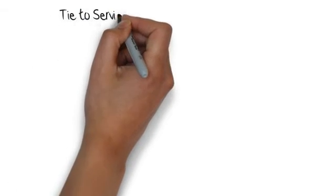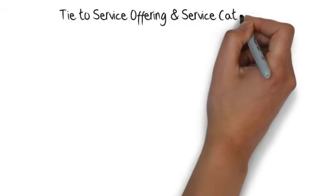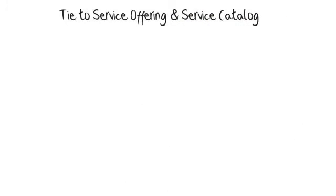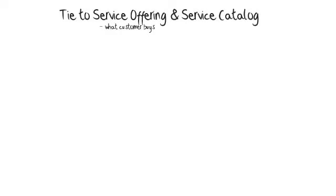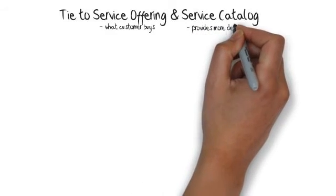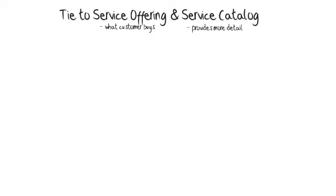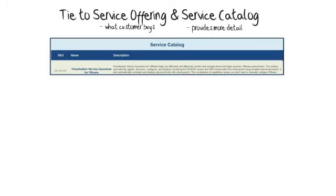It's critical that the monitoring governance be tied to your service offering and service catalog. The service offering is what your customer buys. The service catalog then provides more details. CA has created a tool called the Monitoring Governance Worksheet and will be covered in more detail as part of the services engagement.